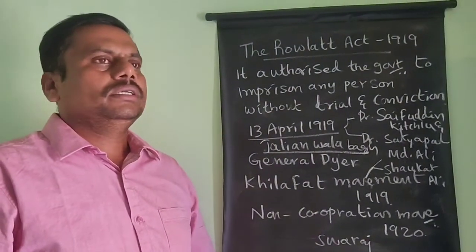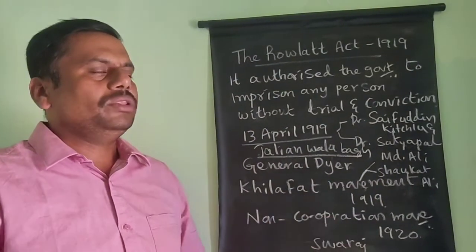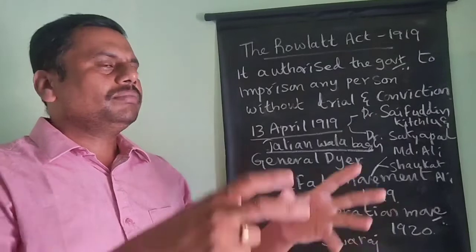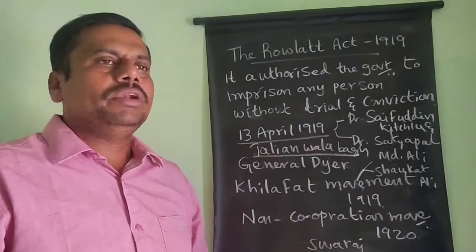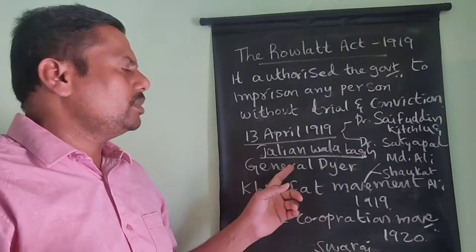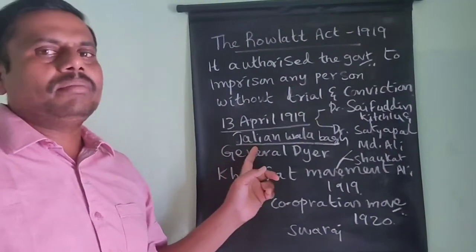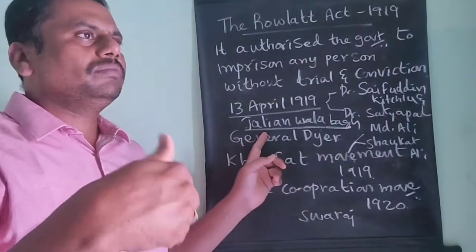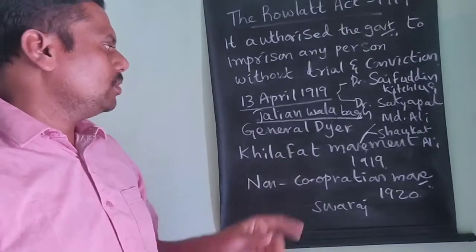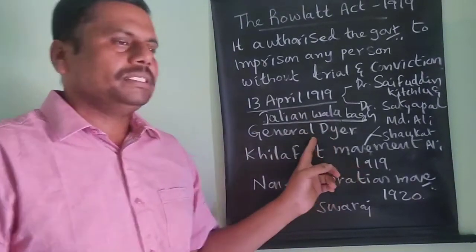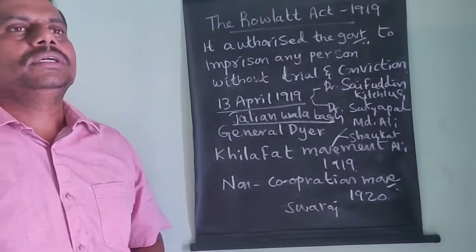The British soldiers started shooting against all the people. There was no way to escape from that garden, and more than a thousand people died in that instance and many more were wounded. It is a black-letter day in Indian history — this was the Jallianwala Bagh Massacre, in which thousands of Indians died, and General Dyer was responsible for it.